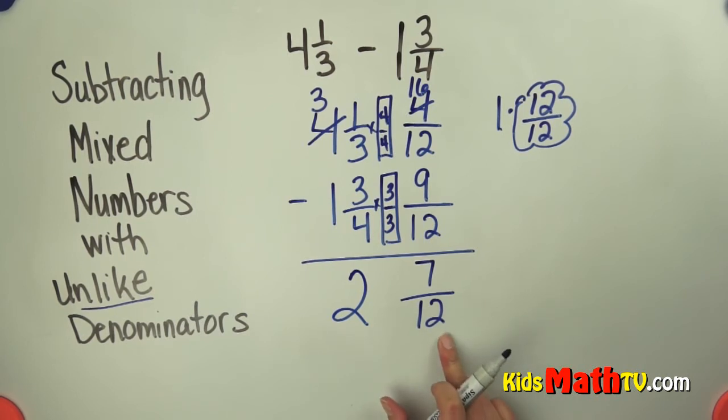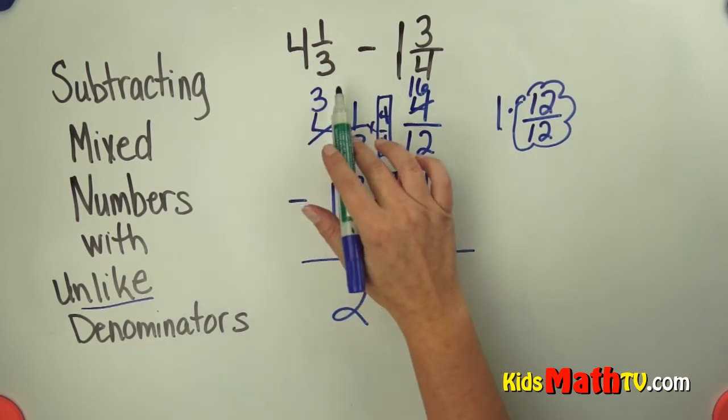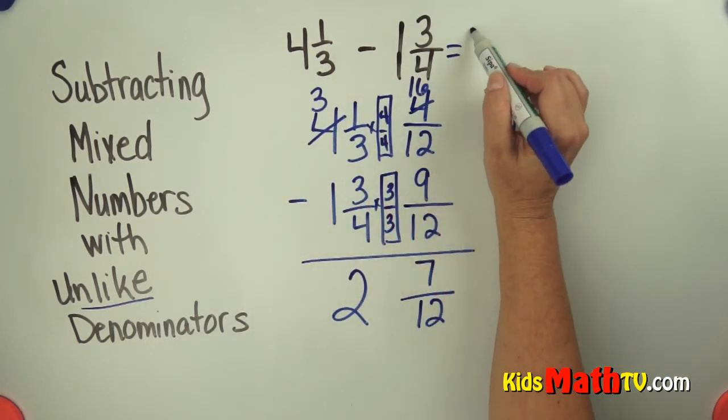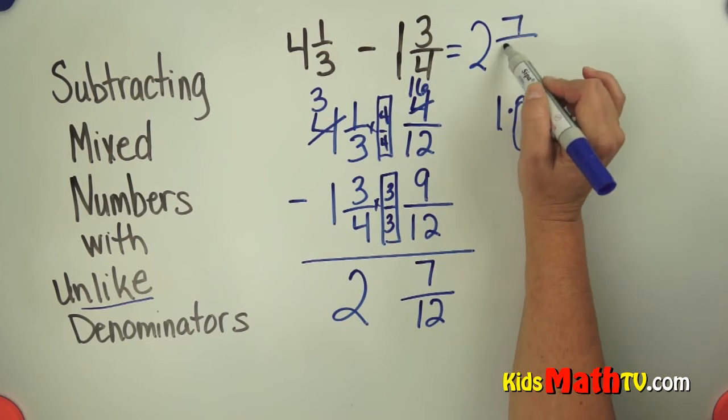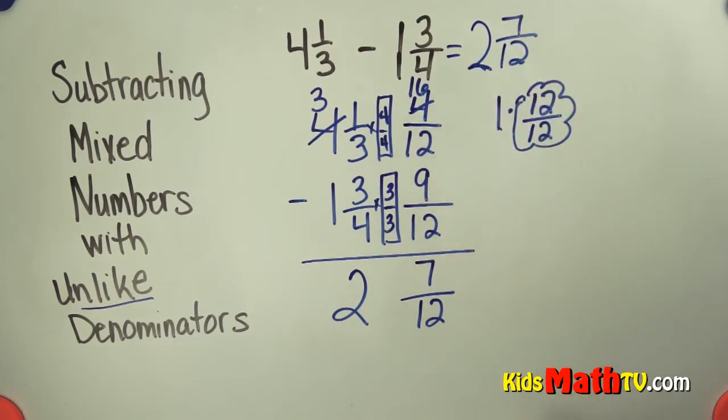I check can I reduce or simplify 7 twelfths. 7 is prime and 7 does not divide 12. So this is simplified in lowest terms. So my answer to 4 and 1 third subtract 1 and 3 fourths is 2 and 7 twelfths. That's the end of our lesson on subtracting mixed numbers with unlike denominators.